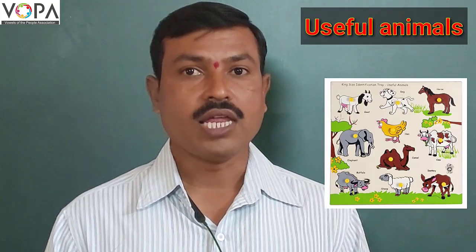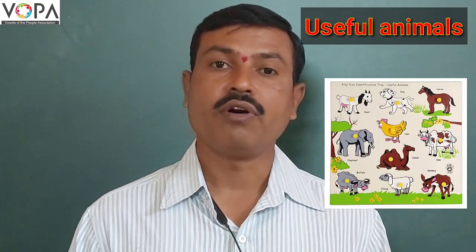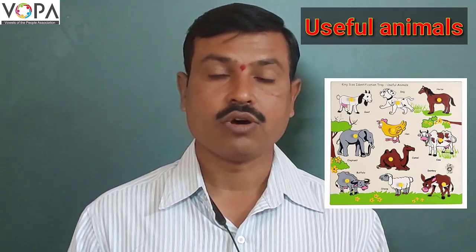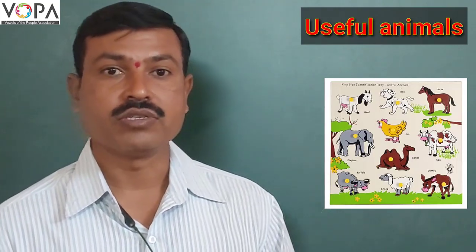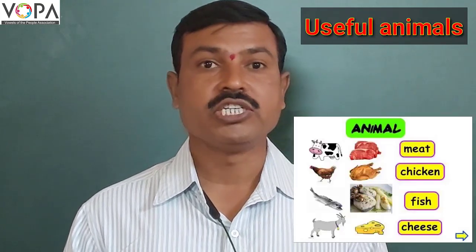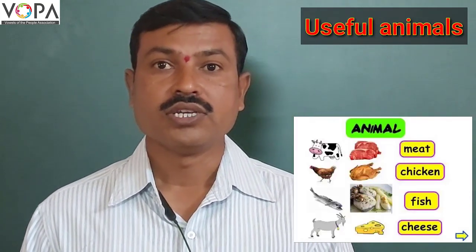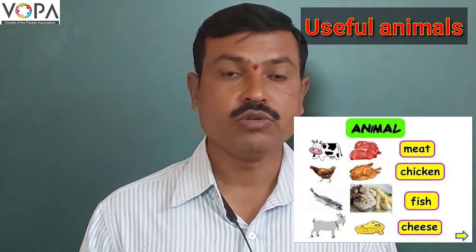Animals are also useful for human beings. Dogs, cats, cows, and buffalo are pet animals and they are useful to human beings. Fish, sheep, and goat are food animals — we use these animals for food.